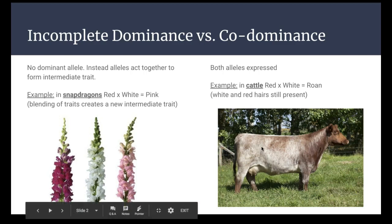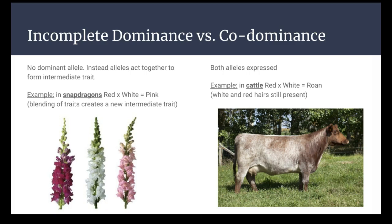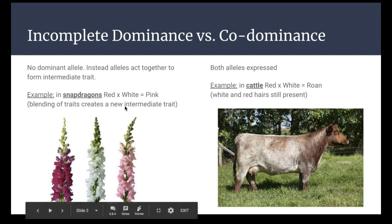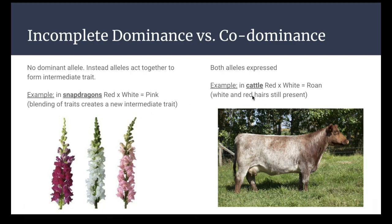So you guys can see on this cow there's white hairs, there's red hairs, so it kind of turns into spots a little bit. So that is co-dominance versus incomplete dominance. Incomplete creates a whole new trait, whereas co-dominance both of the original traits are still present just kind of in different ways.